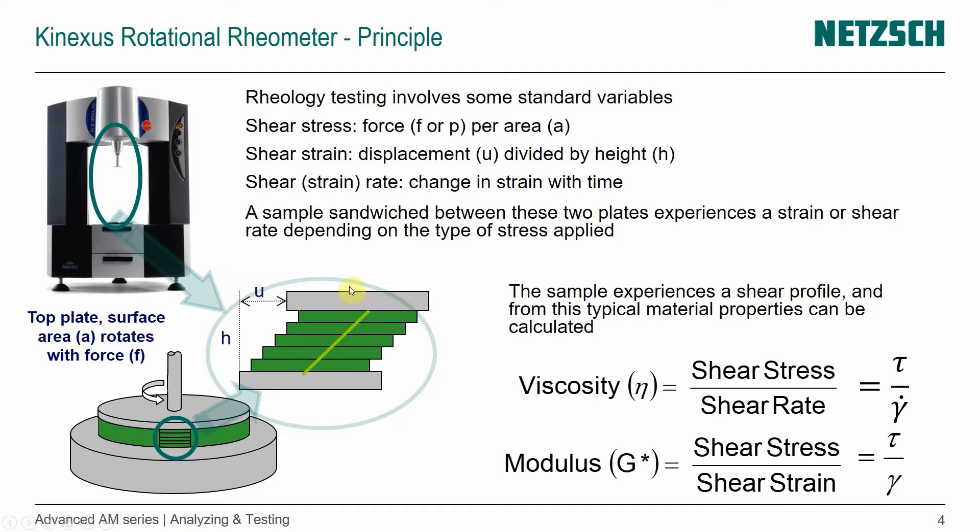In reality, we're actually rotating it. We use a certain force to get a displacement of the distance U over the height of the sample. And then the shear rate or strain rate is the change in strain with time. So we have this sample sandwiched between the two plates, experience a strain or shear rate, depending on the type of stress we apply. We get a shear profile over that thickness of the sample.